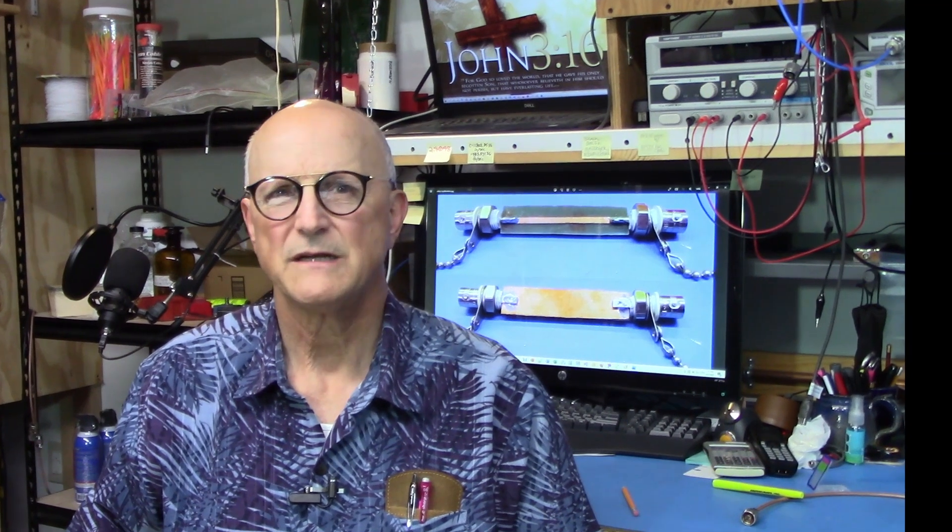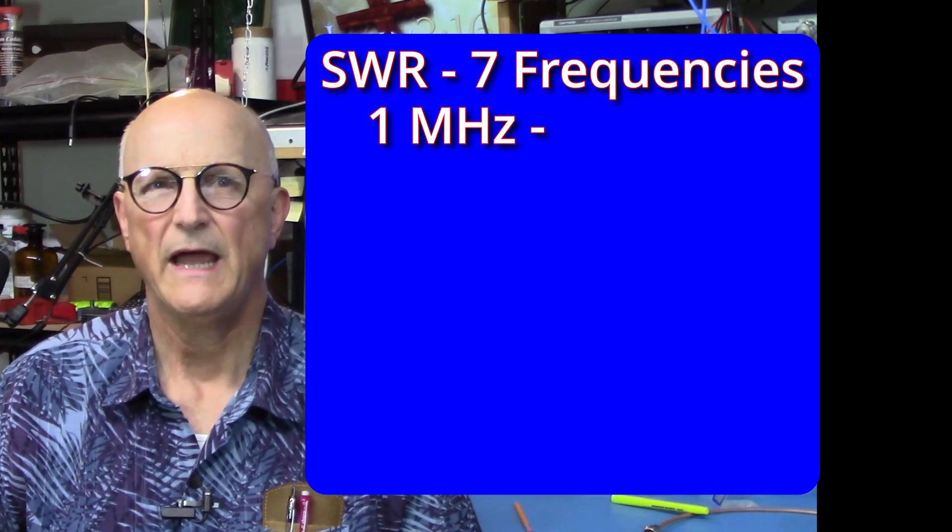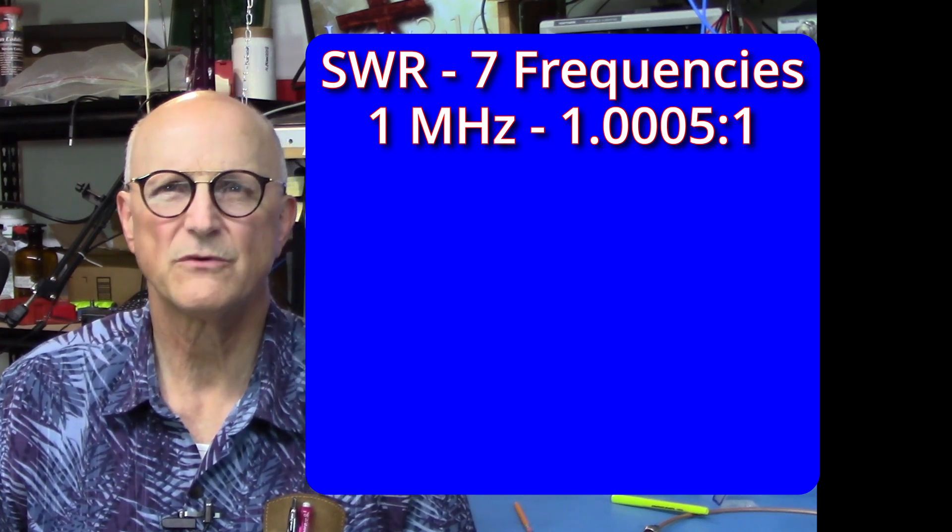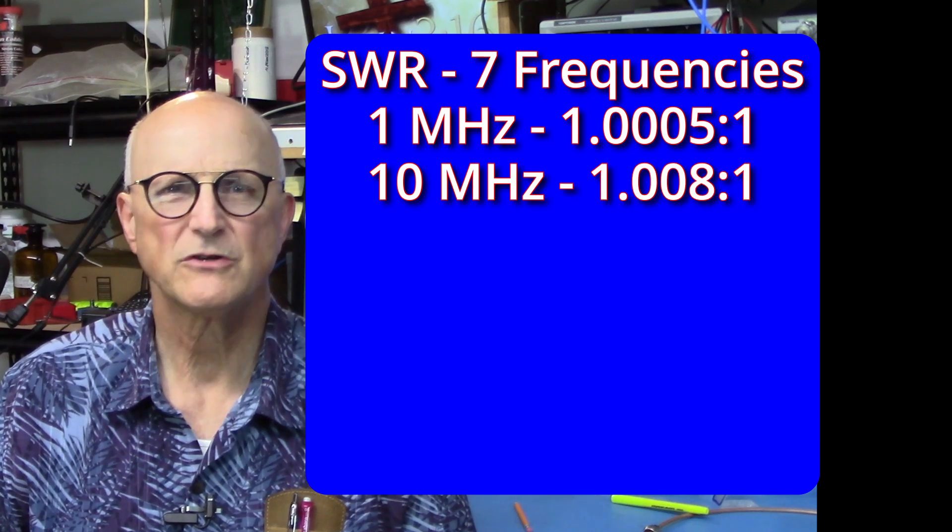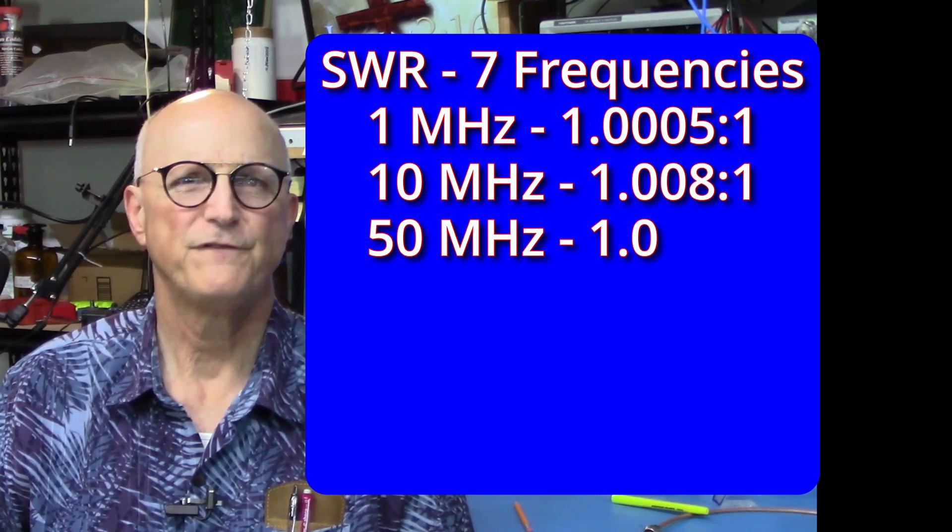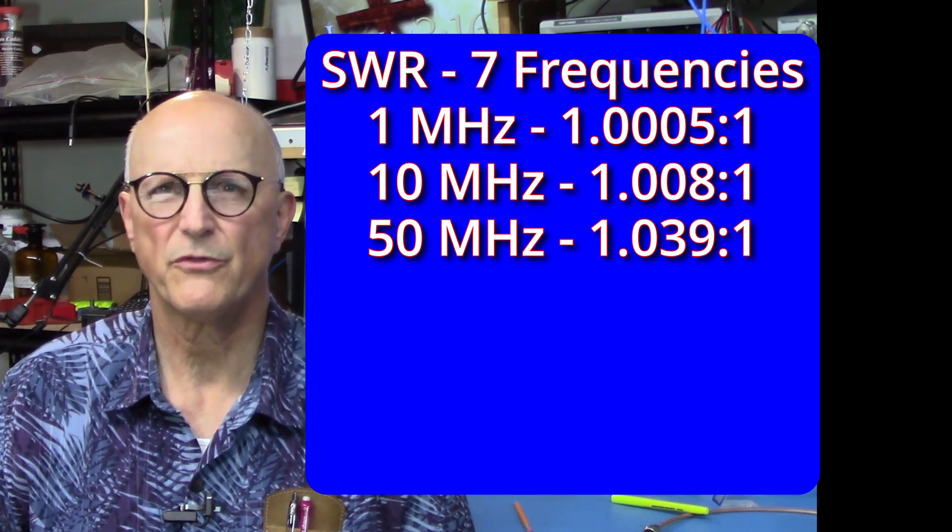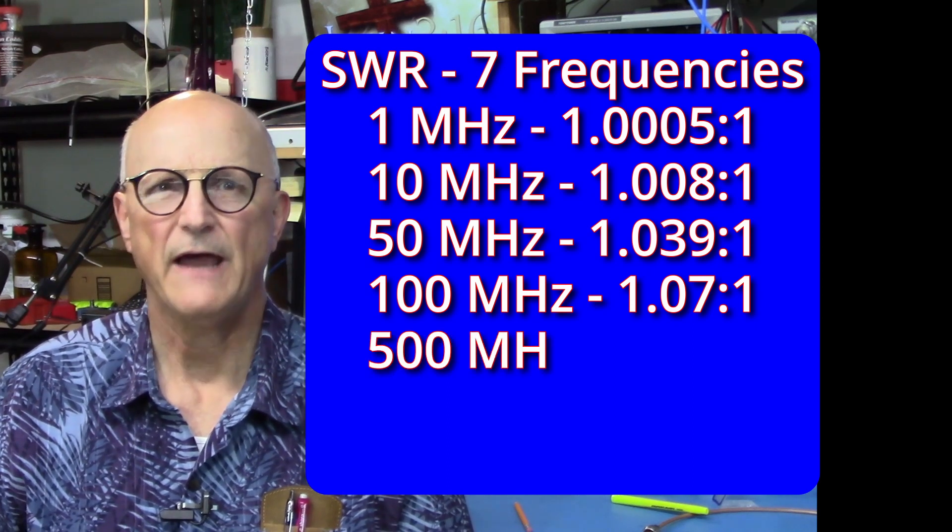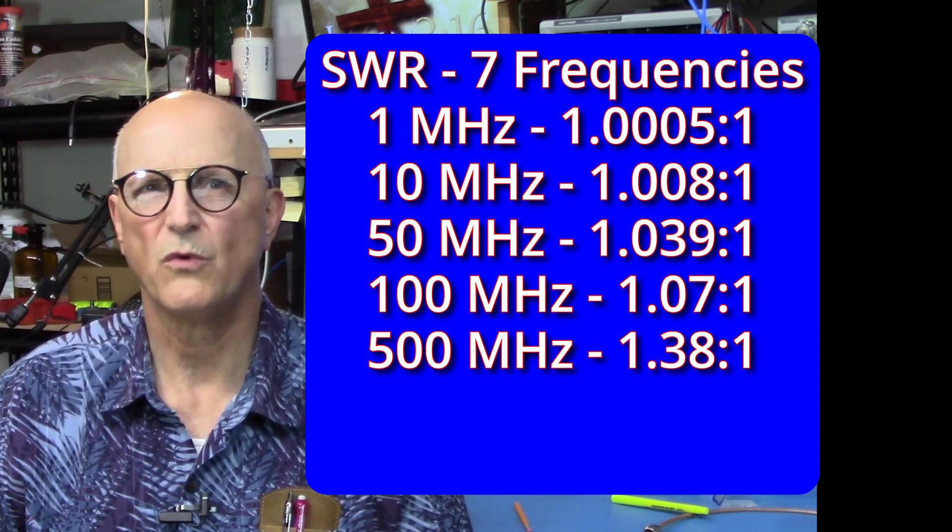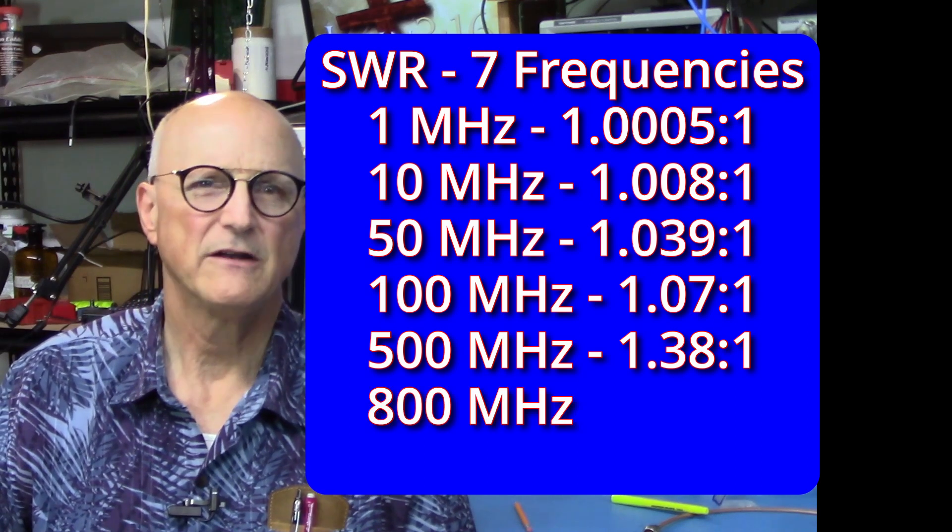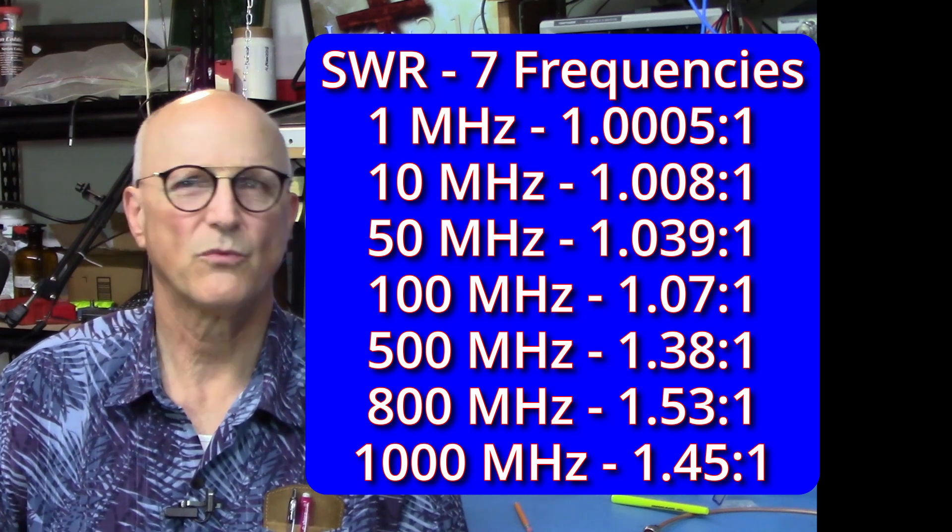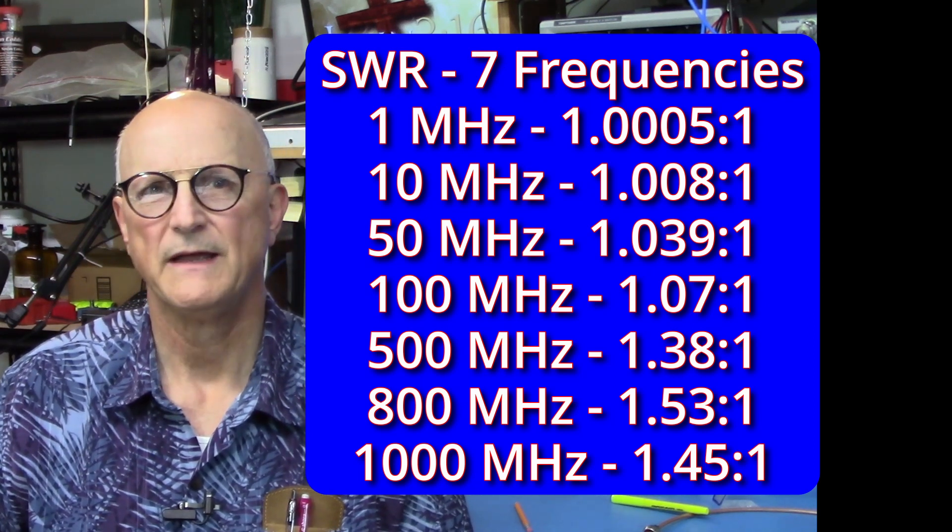I evaluated the SWR at seven different frequencies. At one megahertz, it was 1.0005 to one. At 10 megahertz, 1.008. At 50, it was 1.039. At 100 megahertz, it was 1.07. At 500 megahertz, it was 1.38. At 800 megahertz, it was 1.53. And at one gigahertz, it was 1.45 to one. These numbers are quite respectable.